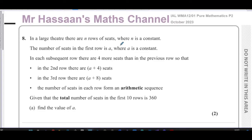Welcome back, this is Mr Hassan's Maths channel. I'm now answering question number eight from the October 2023 Pure Mathematics P2 paper. The question is about series and says: in a large theater there are n rows of seats, where n is a constant.